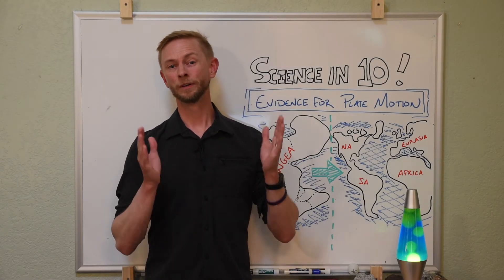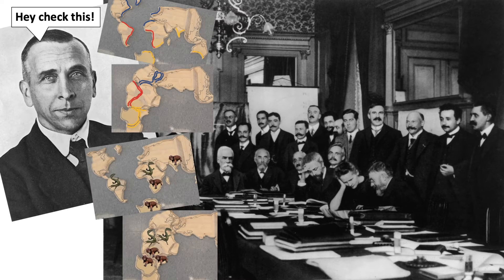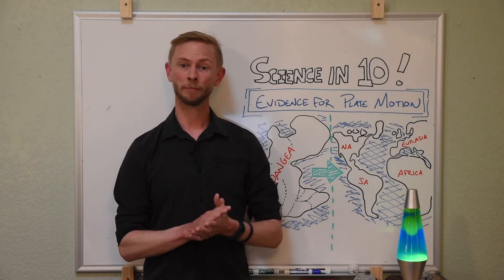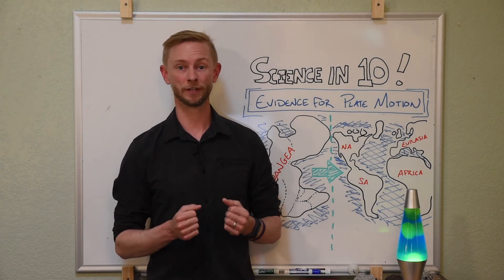But when Wegener presented his ideas in the early 20th century, his hypothesis of continental drift and all the evidence was rejected. What Wegener's hypothesis lacked was a good mechanism for what was driving the motion of the continents.